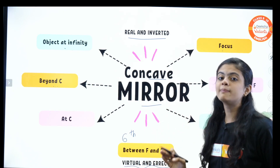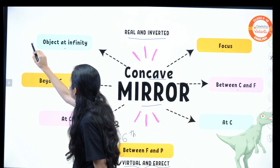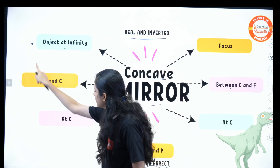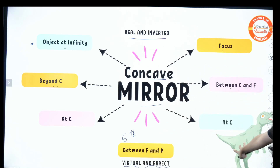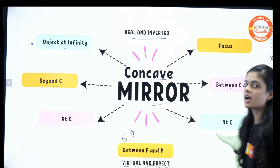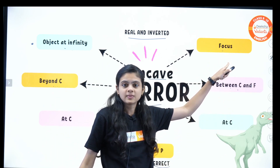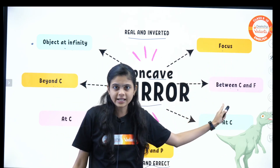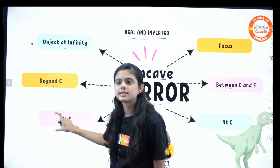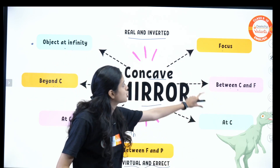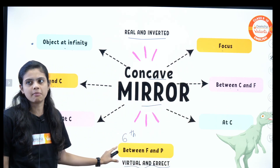Regarding image size in concave mirror: image size starts as a point, then increases as we go around. I've used a dinosaur to represent increasing image size. The sizes are: point-sized, diminished, same size, large/enlarged, and when the object is between focus and pole you get a large virtual image.